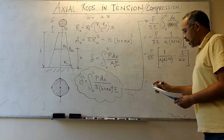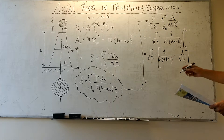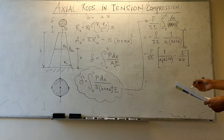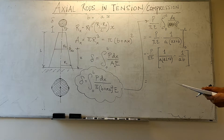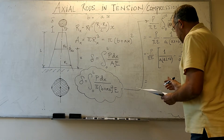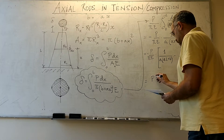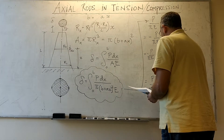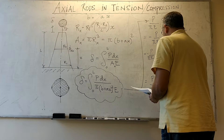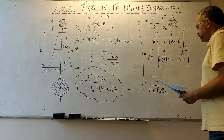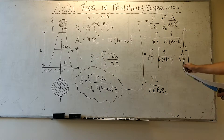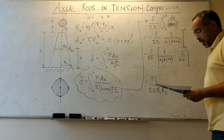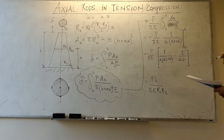After a little bit of algebra — which is really not that hard, you just substitute a and b and work out the sum of the fractions — you're going to find the expression: P·L divided by π·E·r1·r2.